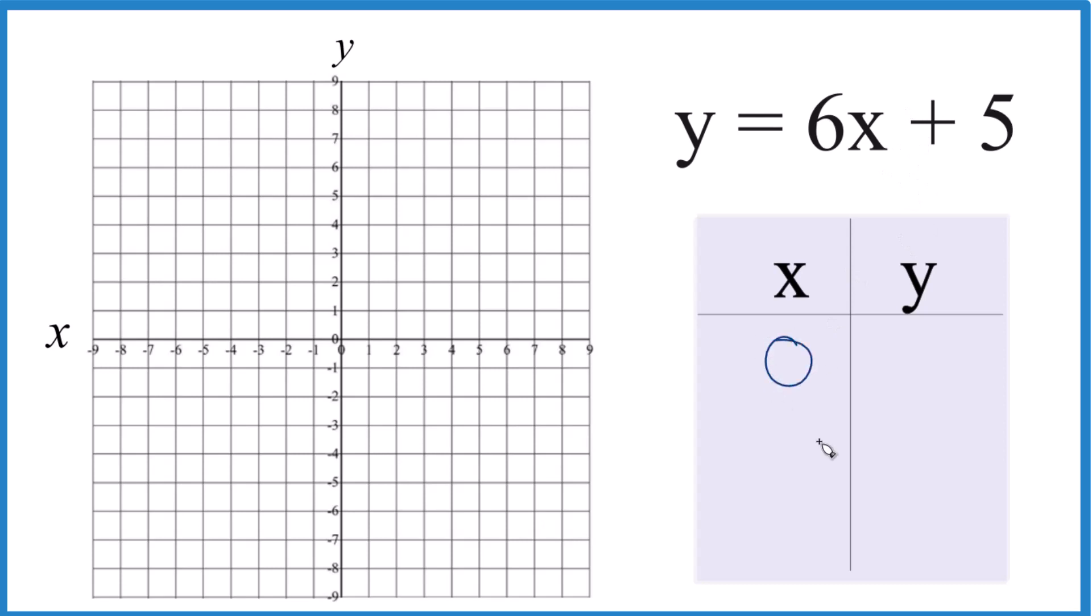I like starting out with 0 for x, because 6 times 0 is 0, 0 plus 5, that gives you 5. How about 1?